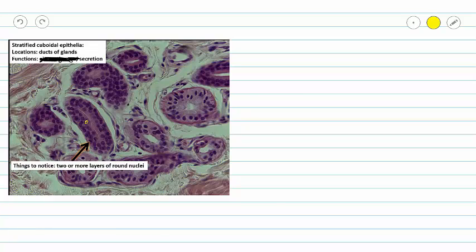We can see we have nice round nuclei that are indicative of cuboidal epithelium. And we can see we have multiple layers of those nuclei.